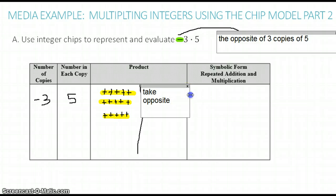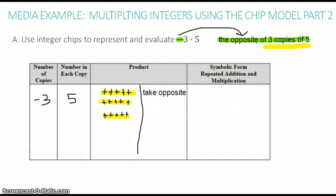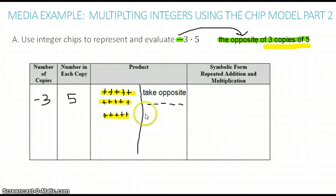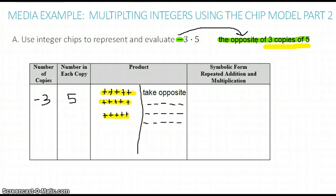So now I'm going to bring in the opposite. Remember, taking the opposite means basically reversing the sign of all of the chips. So instead of positive chips, we're going to rewrite all of these as negative chips. There's the opposite of the first copy, the opposite of the second copy, and the opposite of the third copy. So notice we have the opposite of the three copies of five.